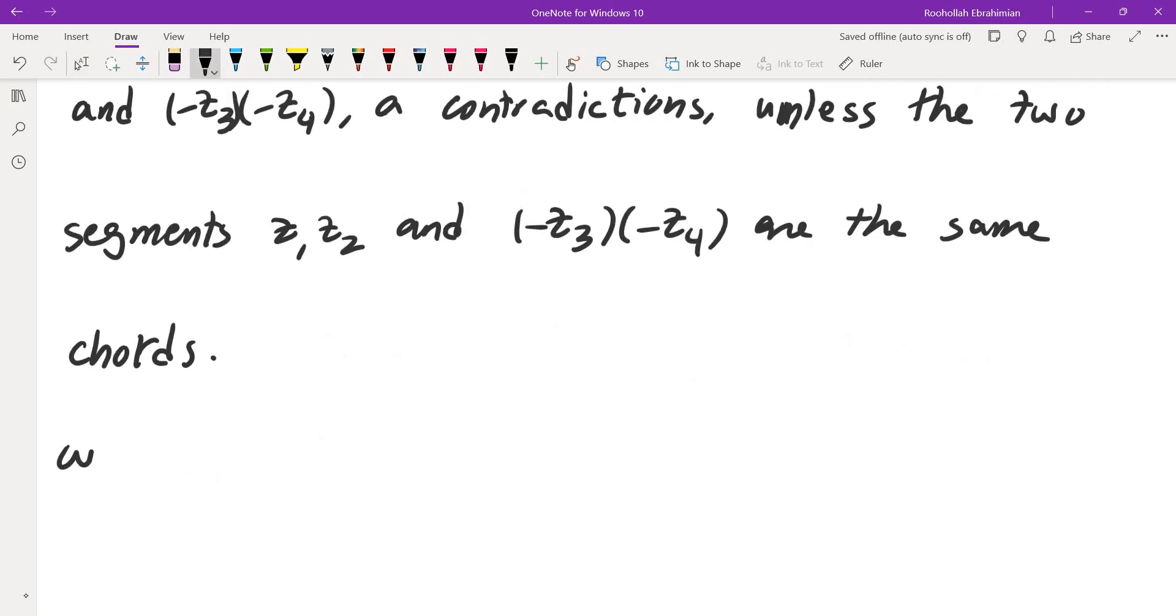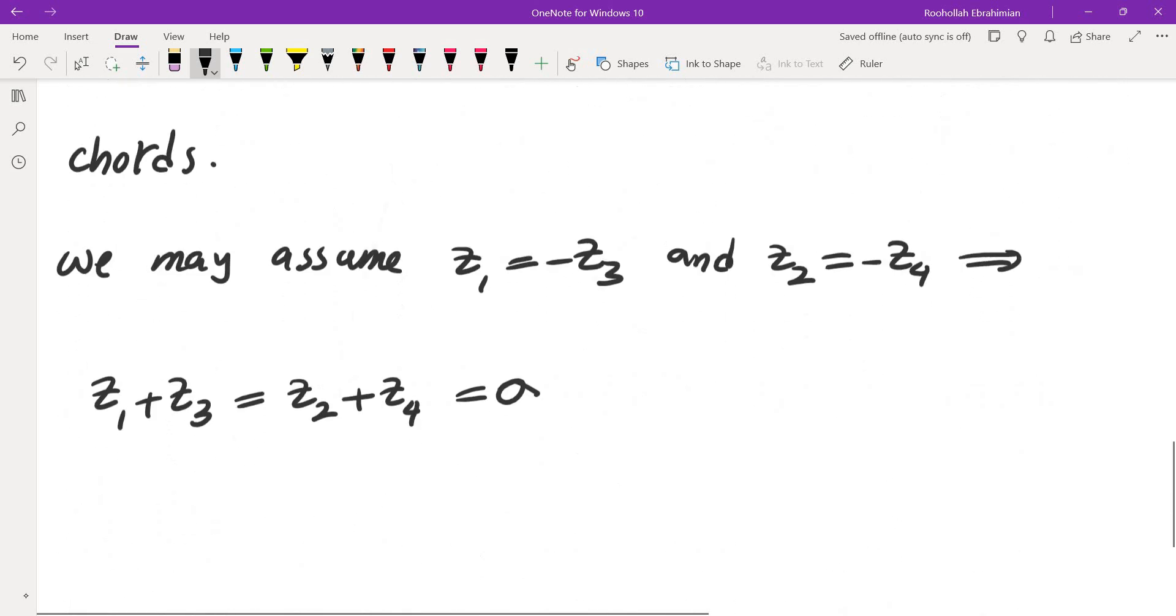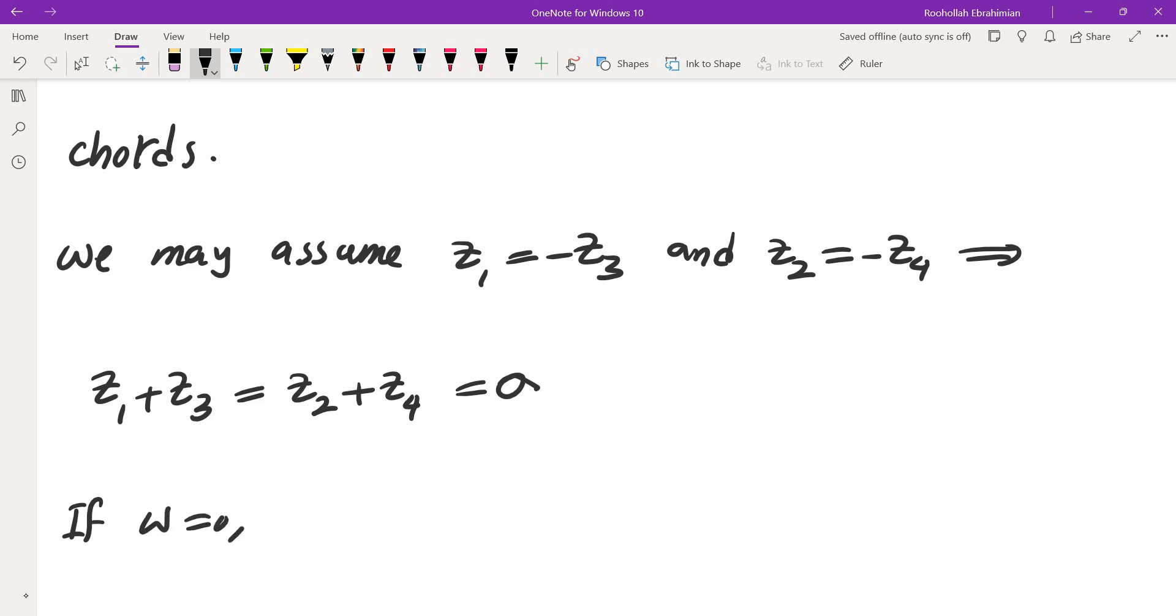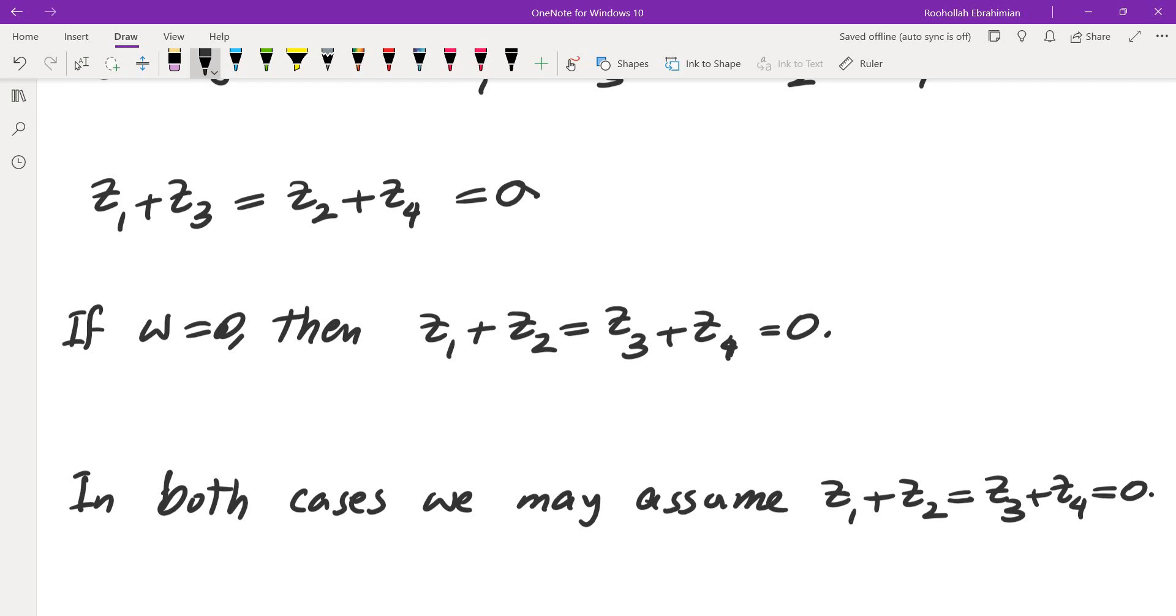So in that case, we may assume that z1 is negative z3 and z2 is negative z4, which means z1 plus z3 is the same as z2 plus z4, and it is 0. Otherwise, if W is 0, then what we have is z1 plus z2 is equal to z3 plus z4, and they're both 0. So in both cases, we got the same thing. In both cases, we may assume that z1 plus z2 is equal to z3 plus z4 is equal to 0 by symmetry.